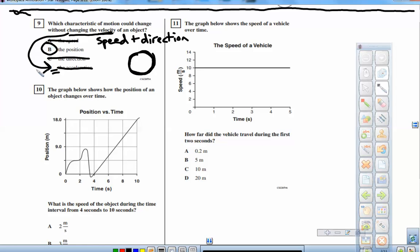This one was a little tricky. It made me pause, so don't feel bad if you were like, oh my gosh, what is this? Okay, so for number 10, the graph below shows how the position of an object changes over time.